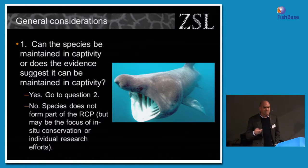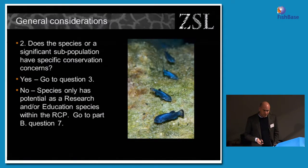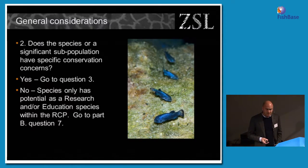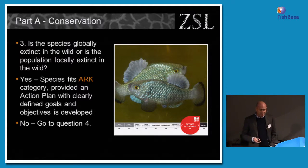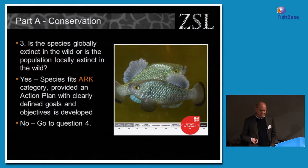The next question is: does the species or a significant subpopulation have specific conservation concerns? If yes, we go to question three. If no, it won't form part of the RCP as a conservation species, but we could jump to Part B and discuss whether it has a research or education role. Question three: is the species globally extinct in the wild, or is the population locally extinct? If yes, it becomes an Arc species and is eligible to be included on the regional collection plan, provided we've developed an action plan for it. If no, we go to question four.